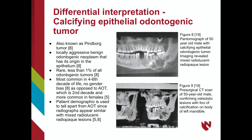Another differential diagnosis for the adenomatoid odontogenic tumor is a calcifying epithelial odontogenic tumor, also known as Pindborg tumors. These are locally aggressive, benign odontogenic neoplasms that arise in the epithelium and are rare, representing less than 1% of all odontogenic tumors. They are most common in the 4th through 6th decade of life with no gender bias, differing from AOTs which are more common during the 2nd decade and more commonly found in females.